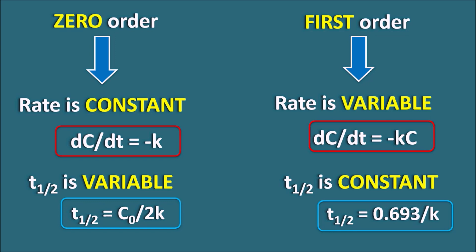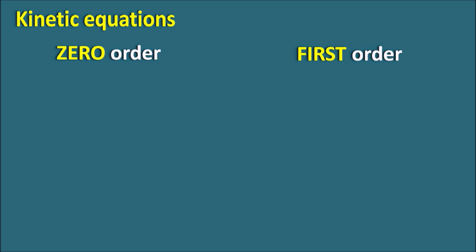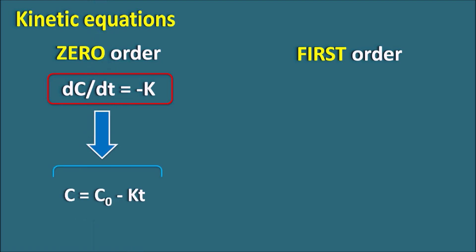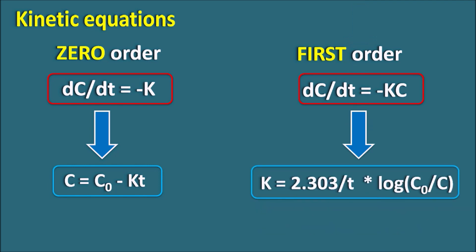Today we will see the calculations involved with first order kinetics. For zero order, the integrated rate equation is C equals C-naught minus k times t. For first order, integrating dc/dt equals minus k times c gives k equals 2.303 divided by t, times log of C-naught divided by C. This is the equation for first order kinetics.